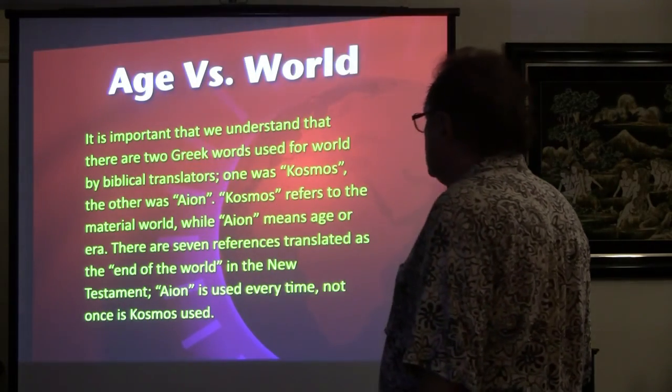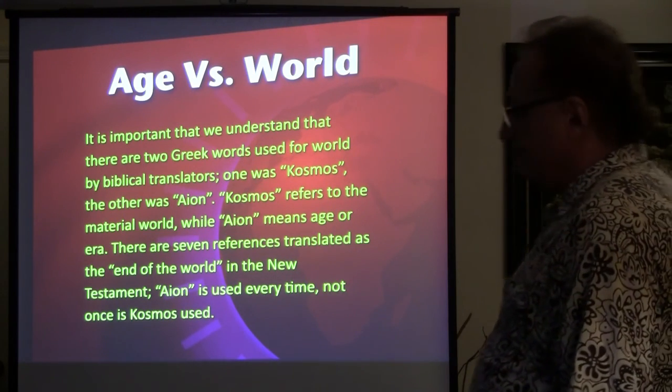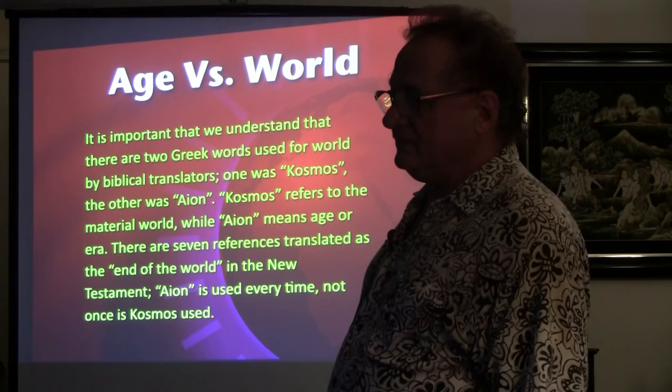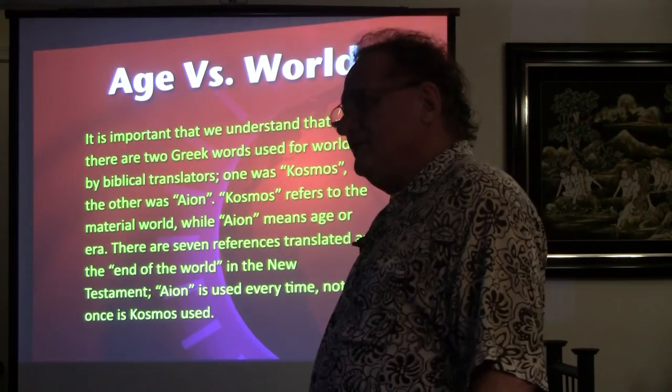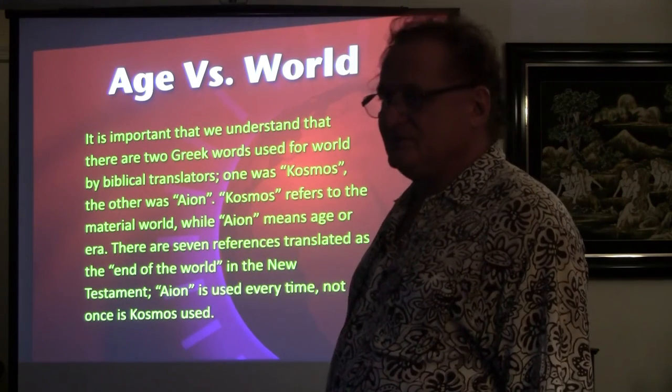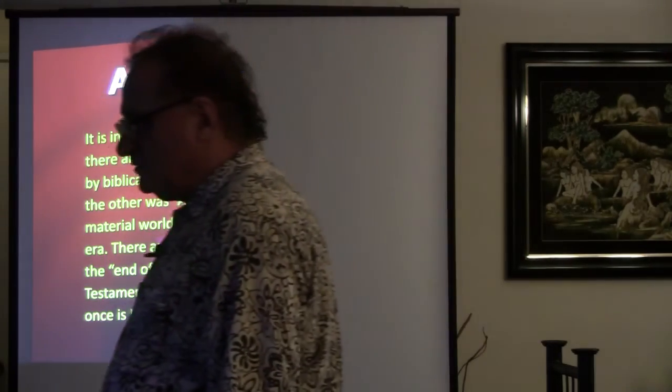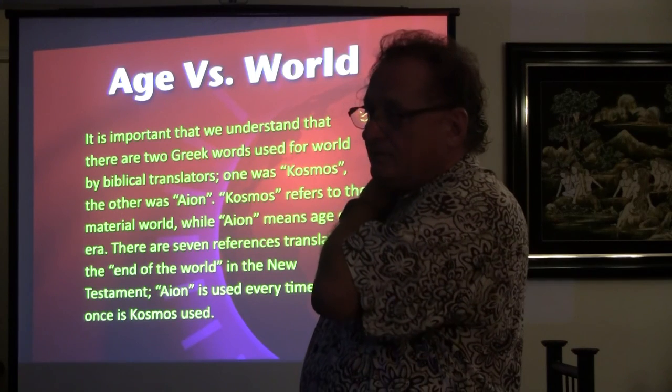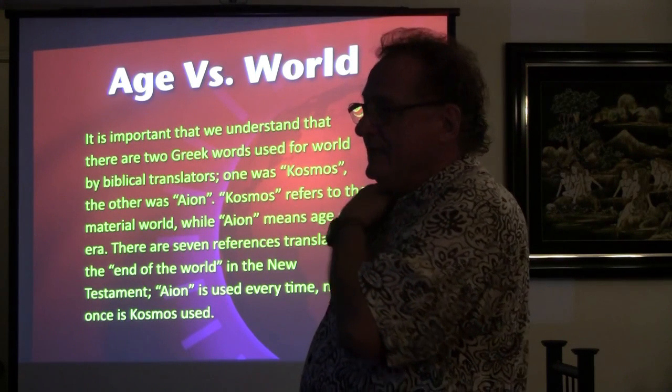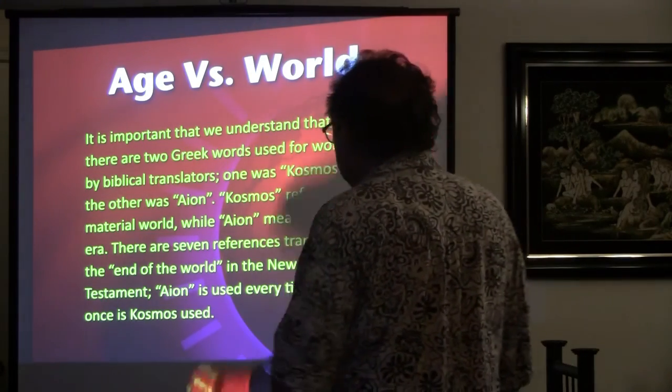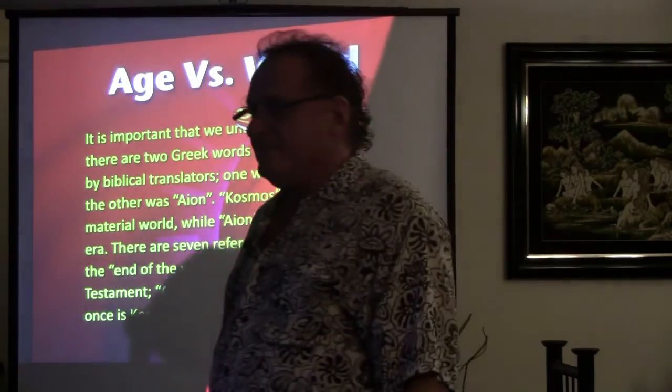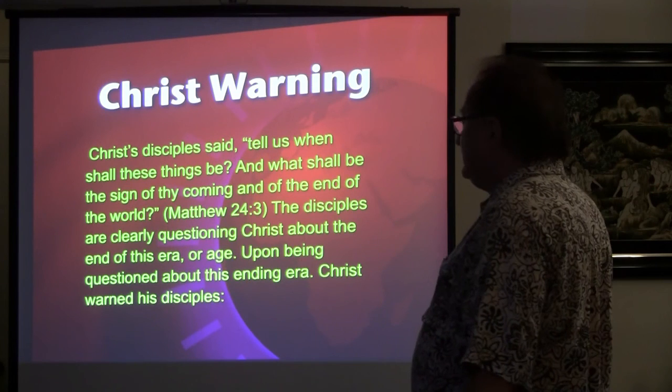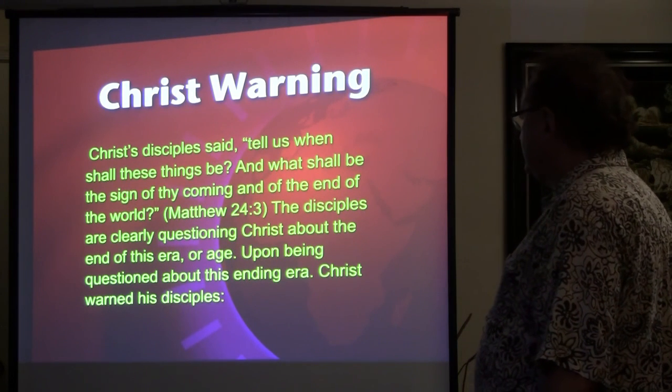It's important that we understand there are two Greek words used for world in the biblical translators. And those two words were not what we think they were. They were not world. How many times have you heard Christians talking about the end of the world? Seven references in the Bible. Only six of them were mistranslated. They were never talking about the end of the world. Six of the translated words were referring to aeon, not cosmos. Cosmos is the end of the world. Cosmos meaning world. The end of the age is aeon, A-I-O-N. And that's what they were referring to. Aeon is used every time. Not once is cosmos used. Christ's disciples said, Tell us when shall these things be, and what shall be the sign of thy coming and of the end of the world. The disciples are clearly questioning Christ about the end of an era or an age.